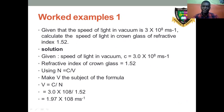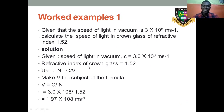Let's go to a worked example. Given that the speed of light in vacuum is 3×10⁸ m/s, calculate the speed of light in crown glass of refractive index 1.52. Speed of light C = 3×10⁸ m/s; refractive index n = 1.52. Using the second formula, n = C/v, make v the subject of the formula. If you work your calculator correctly, this gives you the final result.